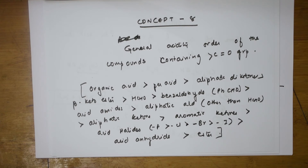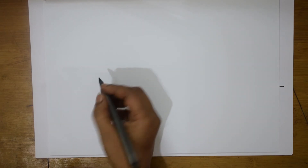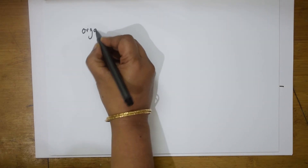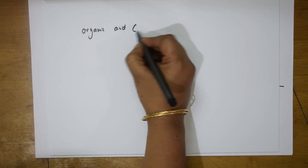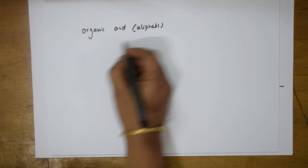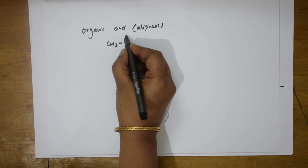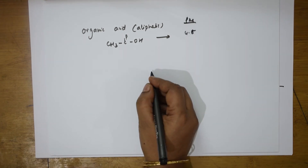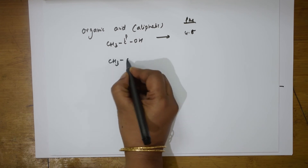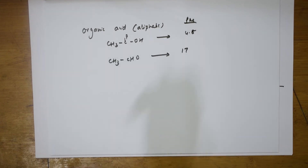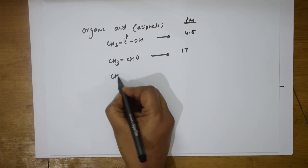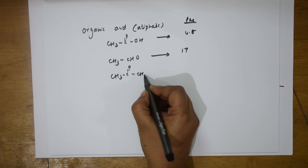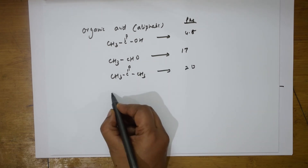If you remember this order, any sort of example they give you, you can just mark and easily get the answer. Now let me write the pKa values for certain compounds. Organic acid — taking aliphatic organic acid, that is acetic acid, CH3COOH — the pKa value here is 4.8. For an aldehyde, CH3CH2..., it is 17. For a ketone, it is 20.